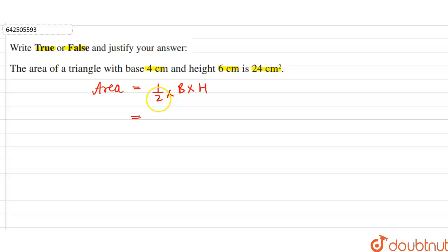Now, in the given question, base is given 4 cm and height is given 6 cm. So we know 2 times 1 is 2, 2 times 3 is 6, and 4 times 3 is 12 cm square.